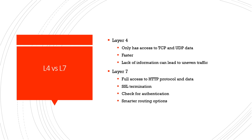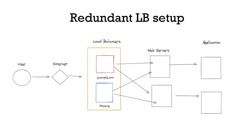Layer 7 has full access to the HTTP protocol and the full data of each request. It can terminate SSL and decrypt traffic, and it can check for authentication — for instance, if a user isn't logged in and tries to access a protected page, the load balancer can redirect them right there without passing the request to the application server. Having access to the full URL and request data enables much smarter routing options. Layer 7 is more CPU-intensive, but with the drop in hardware costs over the years, that's really not a significant factor anymore.